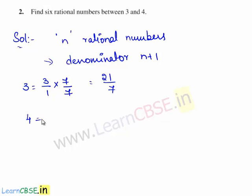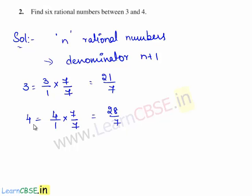Now let us multiply 4 by 1 with 7 on both the numerator and denominator. So we get 4 times 7 is 28, by 1 times 7 is 7. Hence 4 is expressed as 28/7, where 7 is the denominator.